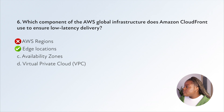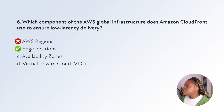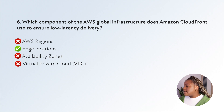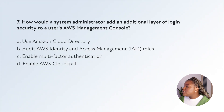Availability zones can't be the right answer — an availability zone is a discrete data center with redundant power, networking, and connectivity in an AWS Region, but it's not used by CloudFront to ensure low-latency delivery. A virtual private cloud also has no purpose related to ensuring low-latency delivery for CloudFront. So option B, AWS edge locations, is the right answer.